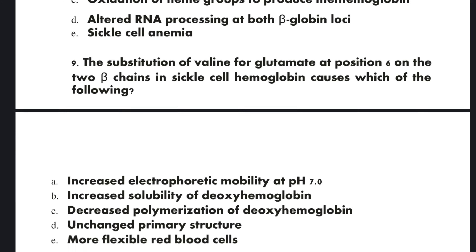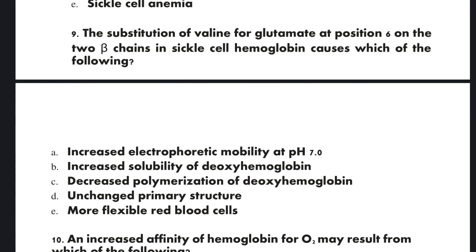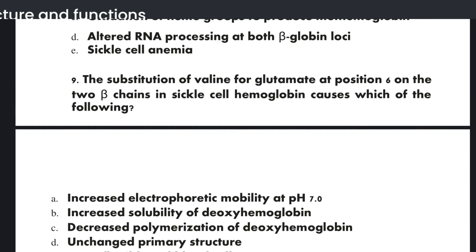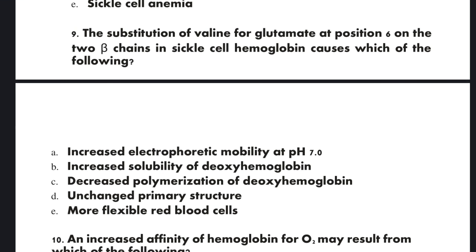Question 9: The substitution of valine for glutamate at position six on the two beta chains in sickle cell hemoglobin causes which of the following? A: increased electrophoretic mobility at pH 7, B: increased solubility of deoxy hemoglobin, C: decreased polymerization of deoxy hemoglobin, D: unchanged primary structure, E: more flexible red blood cells. The correct option is A: increased electrophoretic mobility at pH 7.